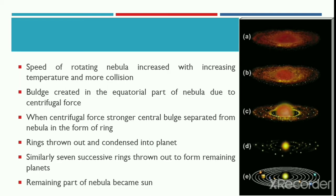These rings that were thrown out condensed into present-day planets. Likewise, seven successive rings were thrown out to form the remaining planets in our solar system. The remaining part of the original nebula became the present-day sun.